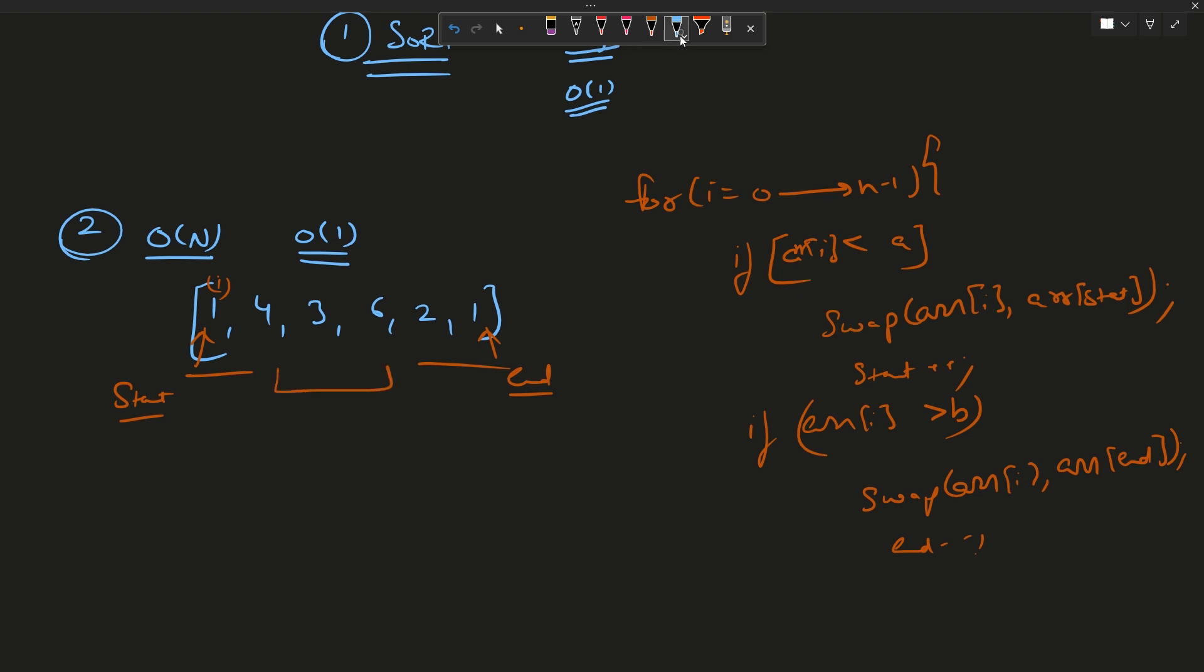Let us have a dry run. First my i is here. One - is one less than one? No, so I move i forward. Four - is four less than one? No. Is four greater than three? Yes. Four is greater than three, so I will swap one and four here. My array becomes this. My i will remain here.